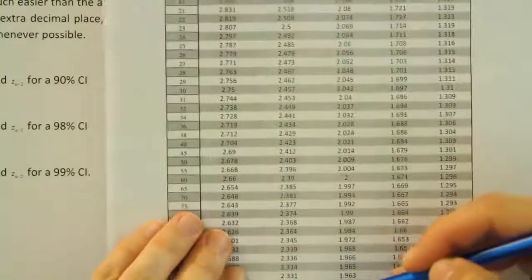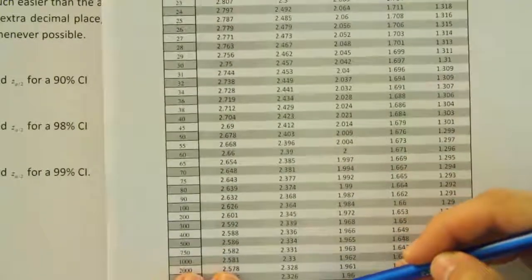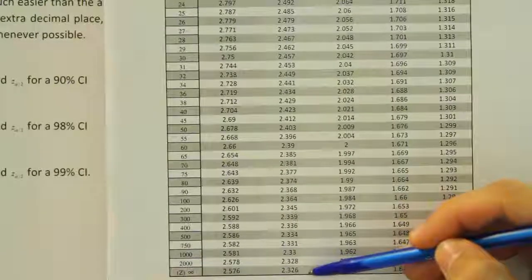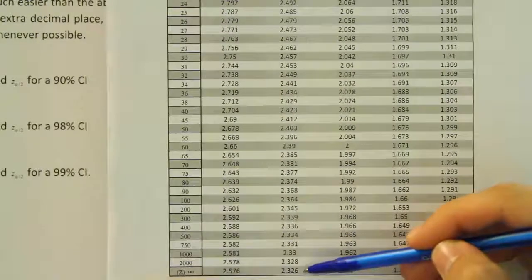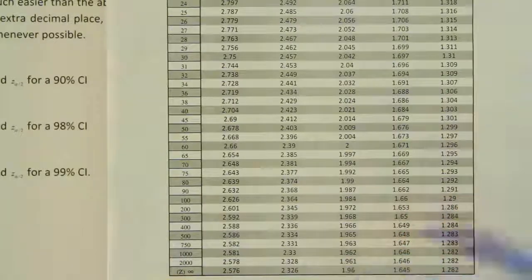So all the way down to the bottom, and we see that the value that we come up with is 2.326. So the z score is 2.326.